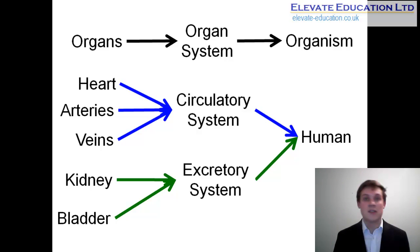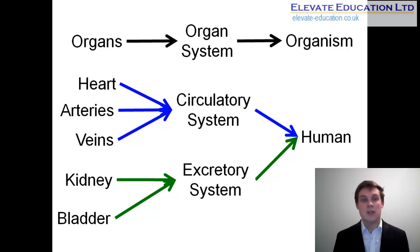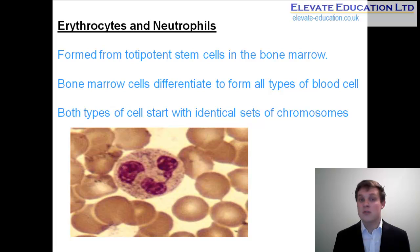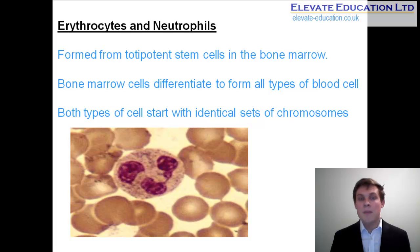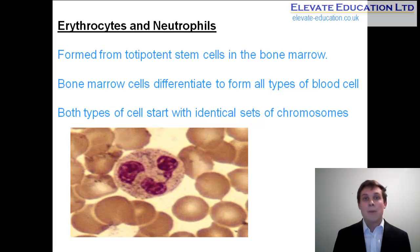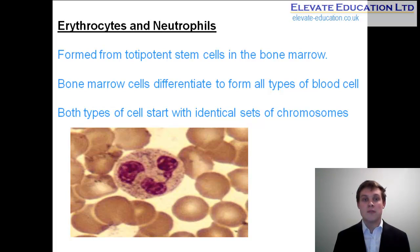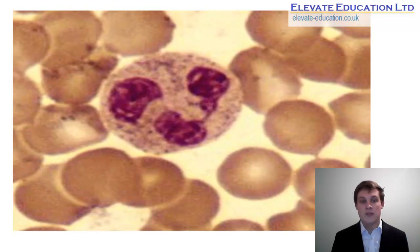Now we're going to look at some different types of differentiated cells found in the human body — how they've become differentiated and how their structure is suited to their function. The first two types are erythrocytes and neutrophils, better known as red blood cells and white blood cells. They're both formed from totipotent stem cells found within the bone marrow, which can differentiate to form all types of blood cell. Because both cell types are created from bone marrow cells, they both start out with an identical set of chromosomes, with each cell having the ability to develop into either an erythrocyte or a neutrophil.